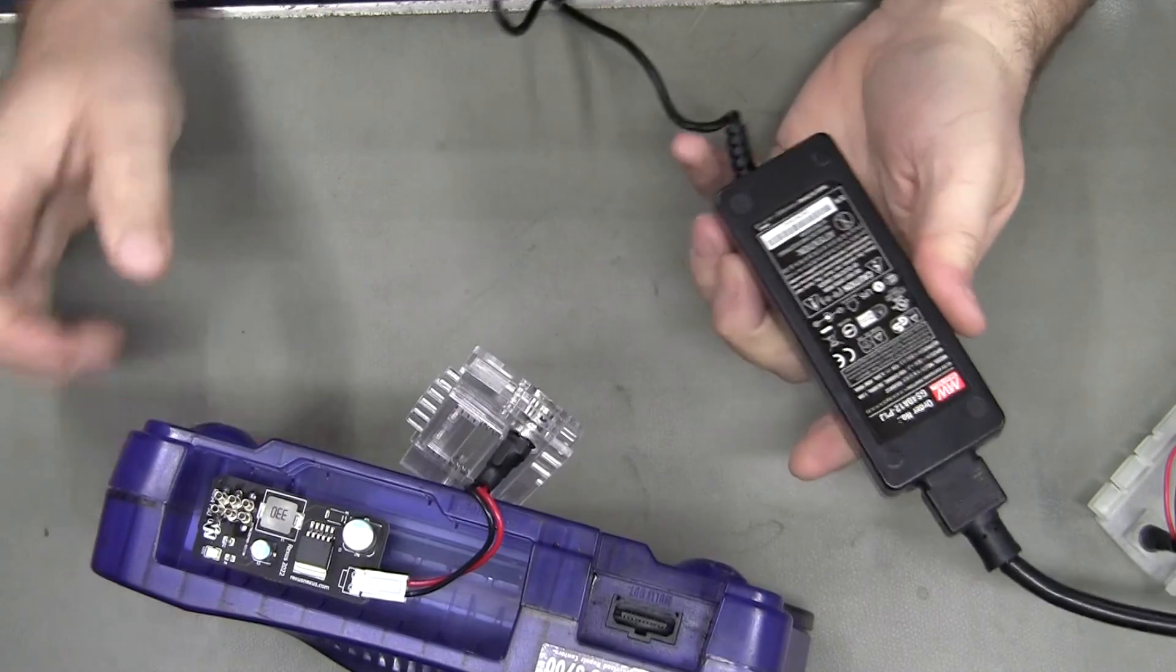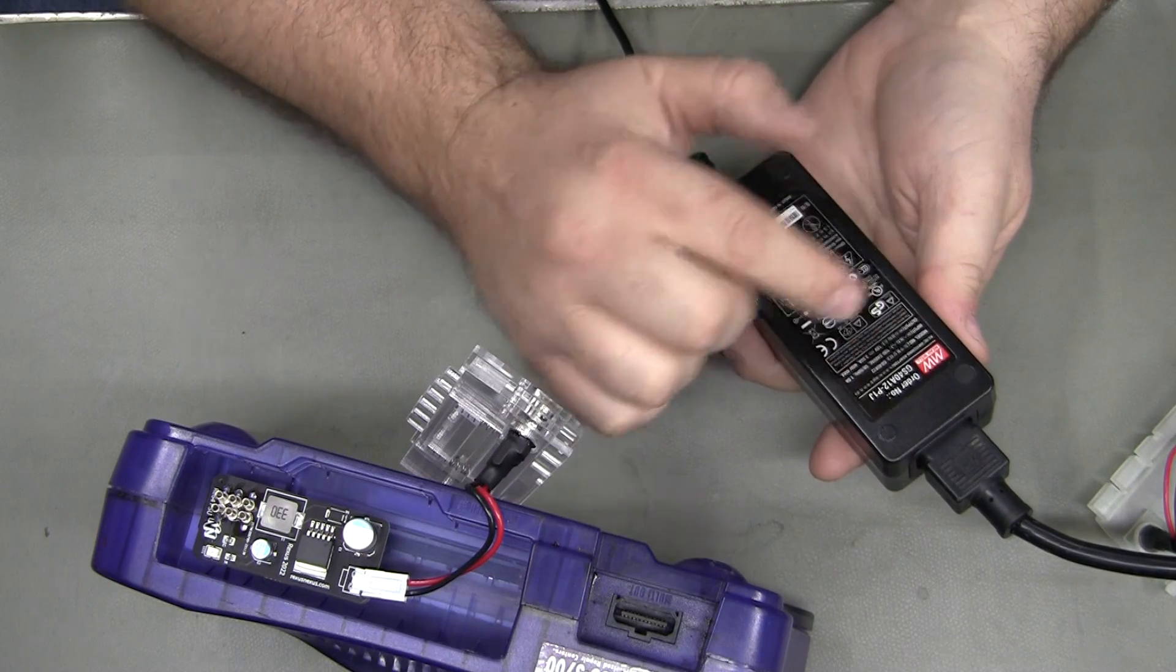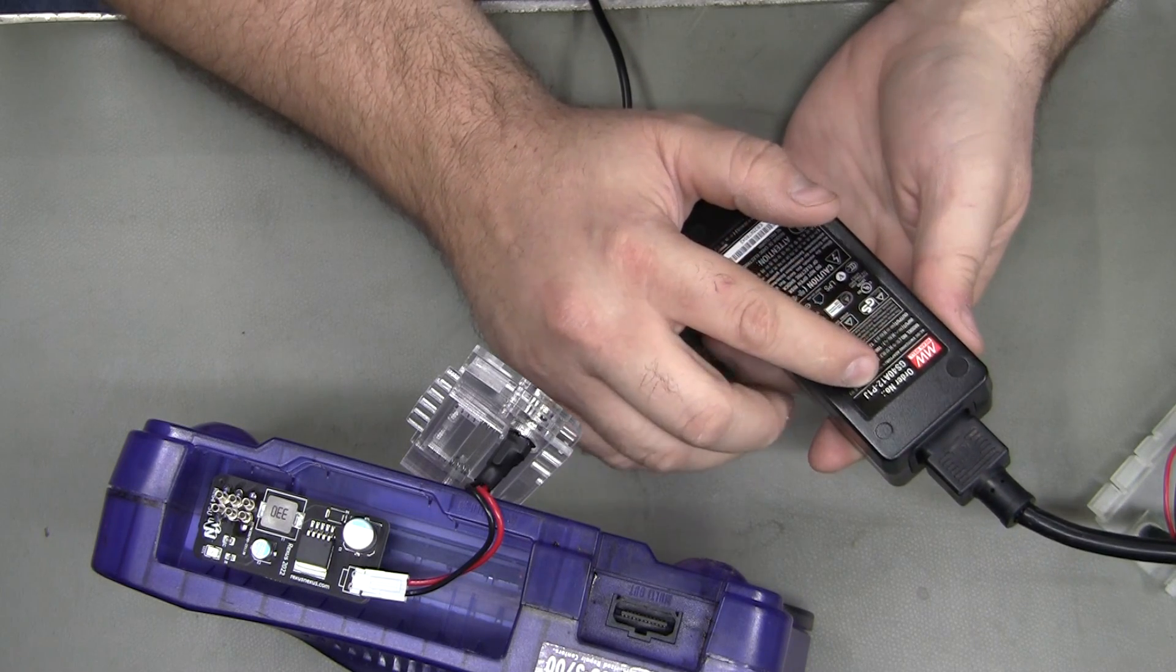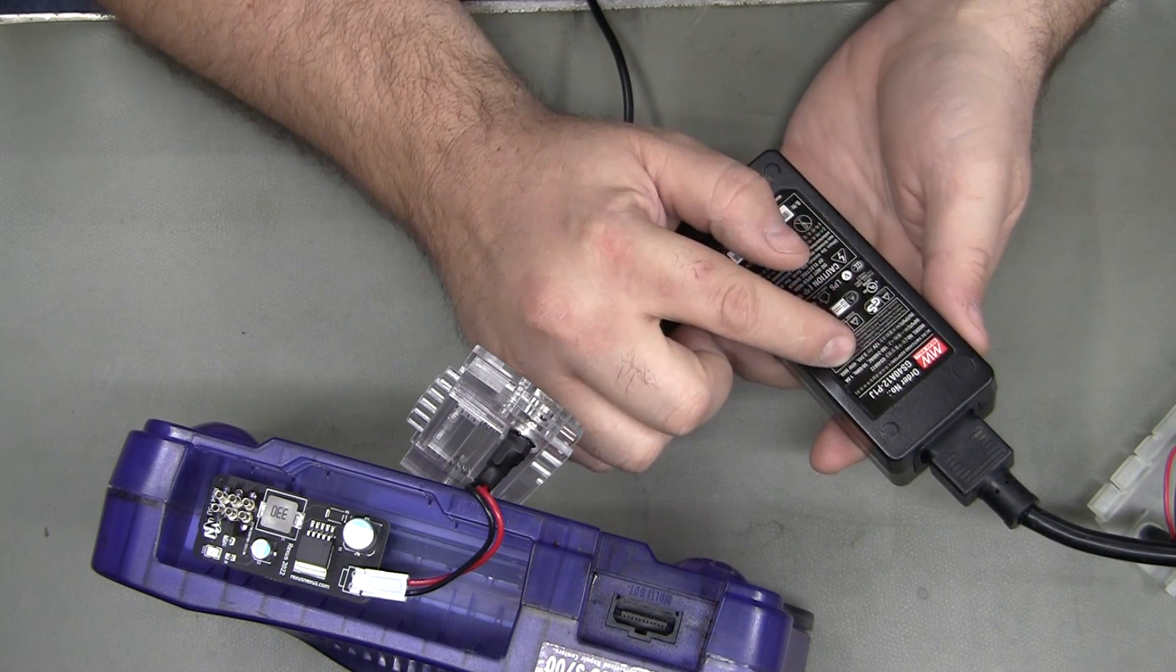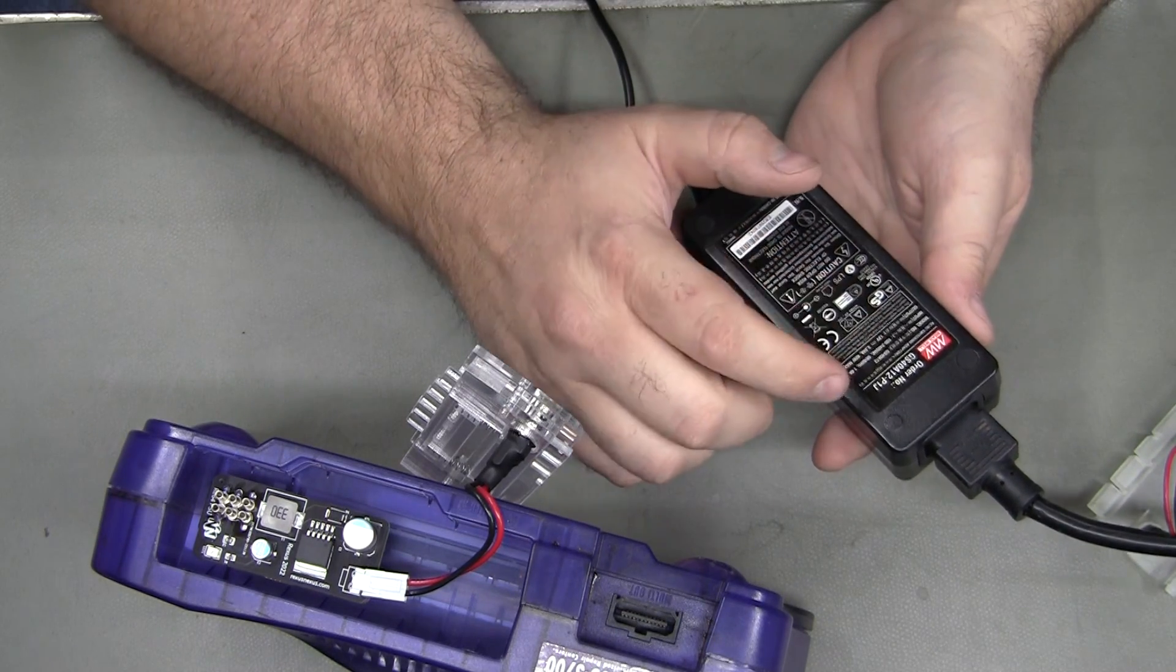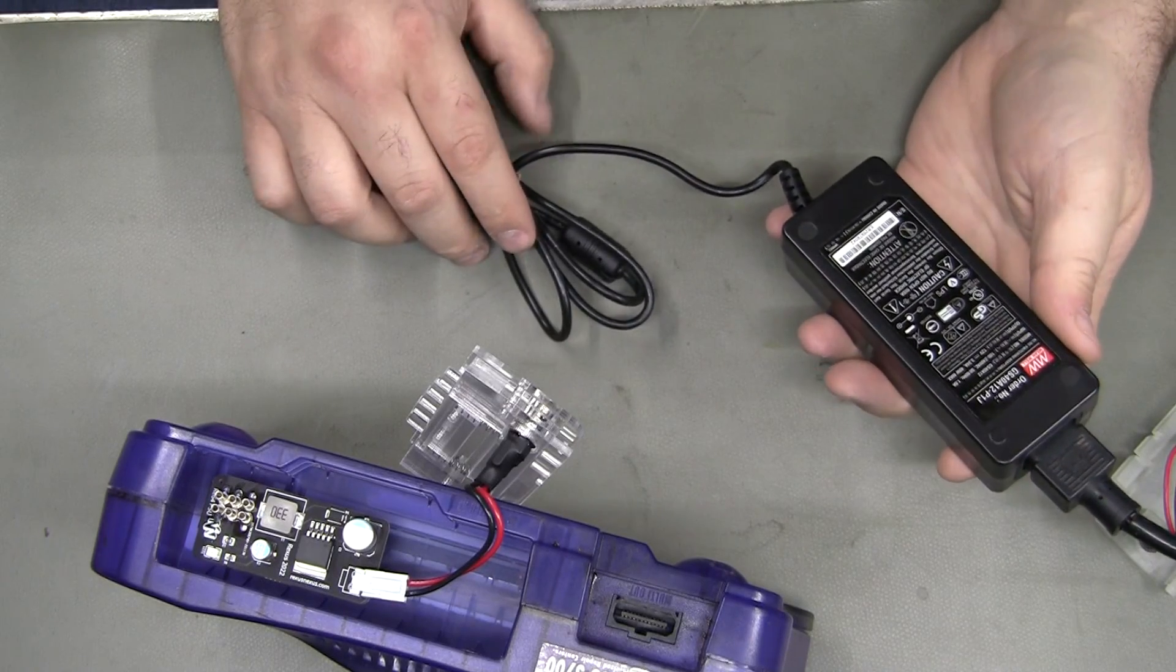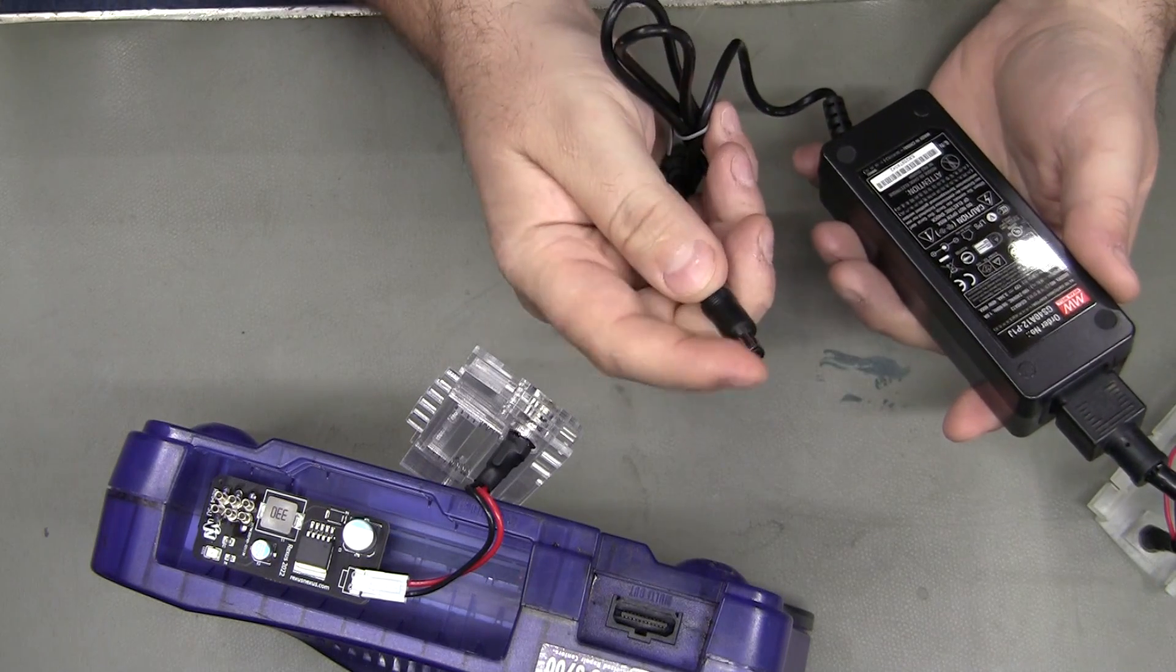So this is one of the recommended PSUs, it's the one I use because I can get a hold of it. It's a Meanwell GS40A12-P1J, so it's a 12 volt, 3.34 amp output, accepts 100 to 240 volt AC. It's got the normal mains cord type input, but the important thing was the tip size and polarity were right.